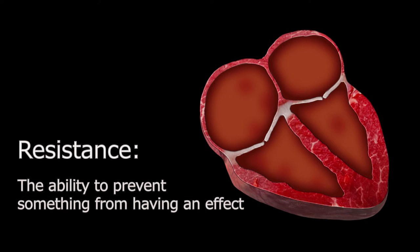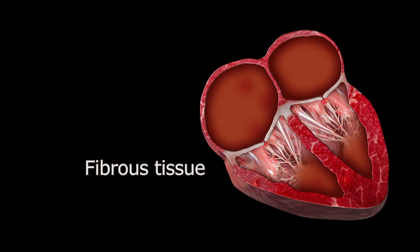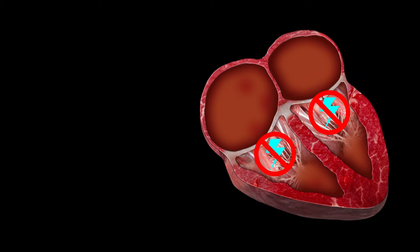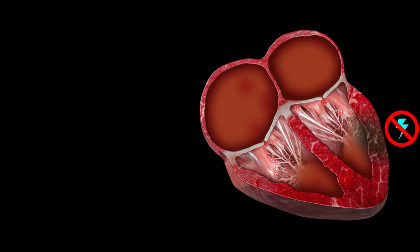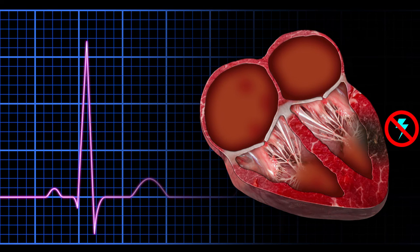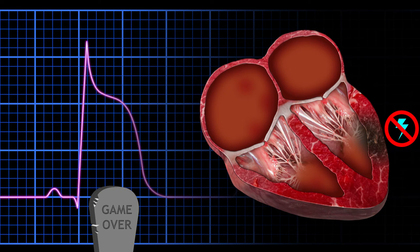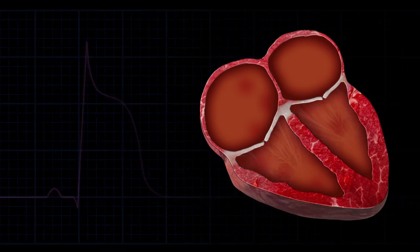When resistance is encountered, it slows down or stops the electrical current. For example, the fibrous tissue that makes up the valves between the atria and the ventricle does not allow for conduction of electricity. Also, dead tissue from a heart attack does not conduct electricity and will slow or change the pattern of the ECG depending on where the dead tissue is located.